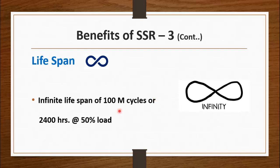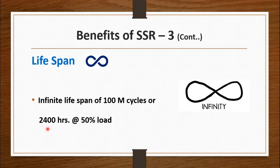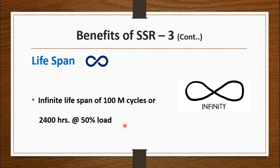The third benefit of solid state relay is lifespan. It has a very long working lifespan which approaches infinity. Some models of SSR have a lifespan of 100 million cycles, or in some cases 2400 hours at 50 percent load. It has almost 100 to 200 times more switching cycles than a common electromagnetic relay. This is because it does not have any moving parts, and it does not have a coil which may burn due to voltage spikes.